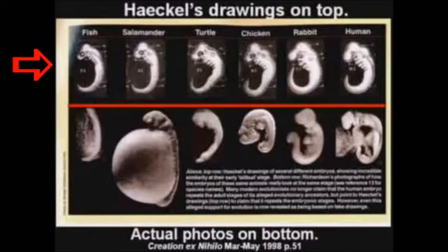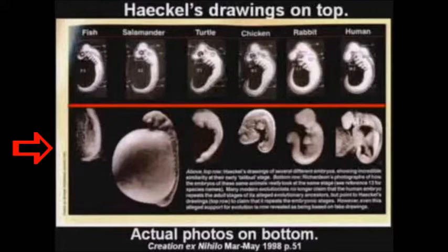At the top of this picture are the drawings that Haeckel made of the embryos of fish, salamander, turtle, chicken, rabbit, and human. The bottom row shows actual photographs of fish, salamander, turtle, chicken, rabbit, and human embryos. You can see that these drawings were fraudulently made to look like life starts out all the same. Haeckel's intention was to show a connection between all life in embryonic state. These pictures were presented as fact, and you can still find them in some university textbooks, even though Haeckel was proven to be a fraud.